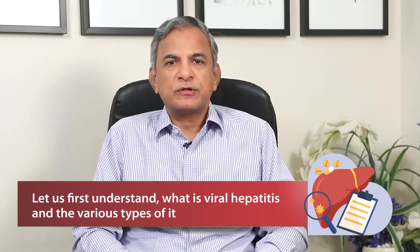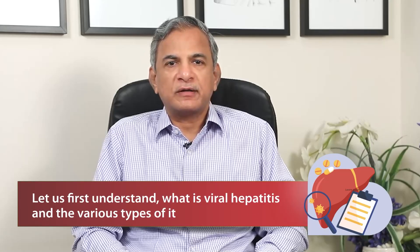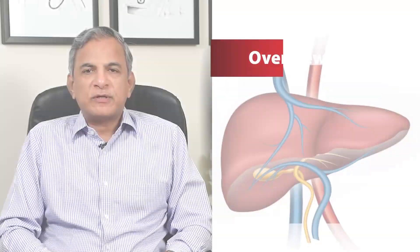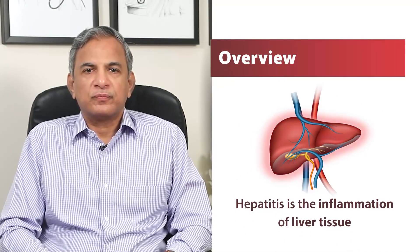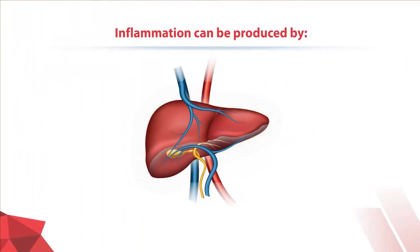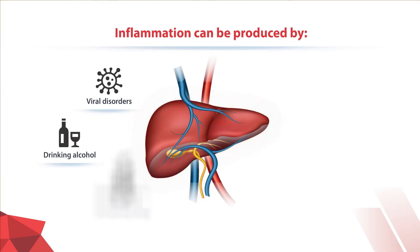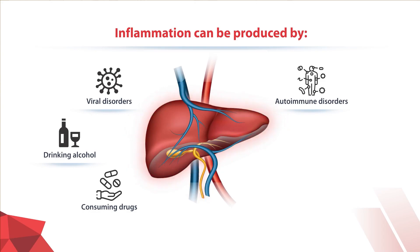Let us first understand what is Viral Hepatitis and what are its different types. Hepatitis means it is the inflammation of the liver tissue. This inflammation can be produced by viral disorders, by drinking alcohol, by consuming drugs, autoimmune liver disorders, infections and sometimes hypoxic hepatitis can also produce liver inflammation.